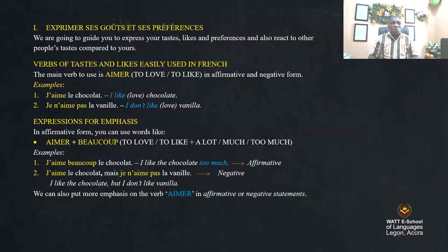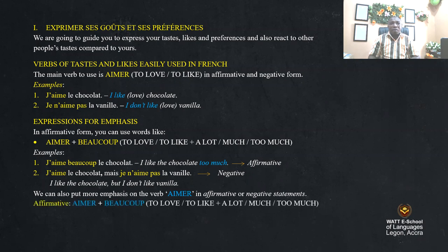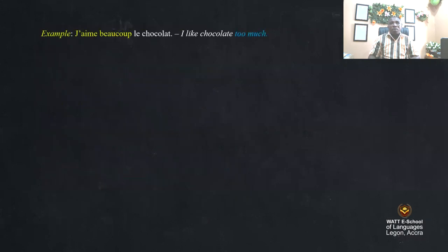We can also put more emphasis on the verb 'aimer' in affirmative or negative statements. Affirmative: 'aimer' plus 'beaucoup' means to love or to like a lot, much, or too much. For example, 'j'aime beaucoup le chocolat' — I like chocolate very much.